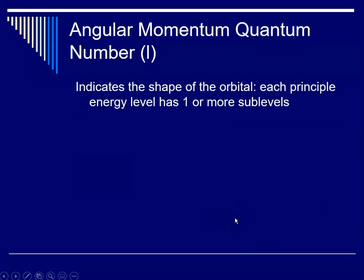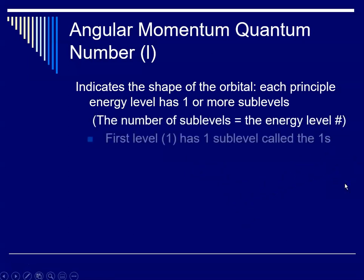So the angular momentum quantum number, which has the symbol L, indicates the shape of the orbital. And each principal energy level has one or more sublevels. And the number of sublevels is equal to the energy level. So, for instance, the principal level one has one sublevel, and it has a special name. It's called S.